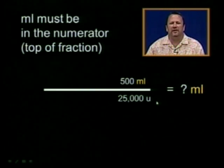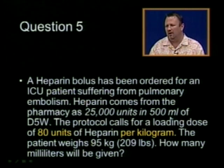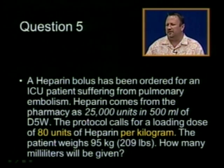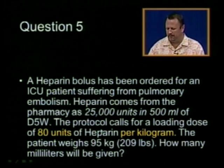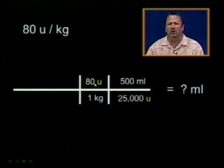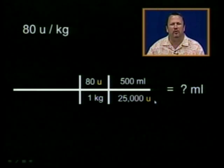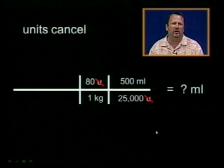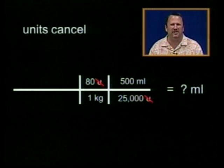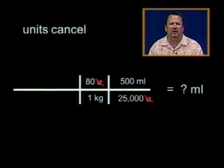So the next thing I want to do is cancel this little heparin unit out right there. So the protocol calls for a loading dose of 80 units of heparin per kilogram. So by putting the 80 units on top and the kilograms underneath, now I have a unit, a heparin unit over a heparin unit. And those units cancel out because a unit over a unit is equal to one and one times anything is equal to itself. And now I'm left with the units milliliters per kilogram.